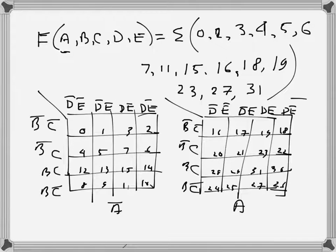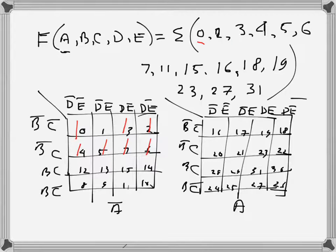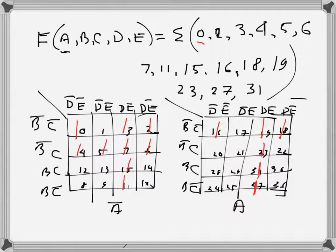Now I will fill in the ones. The minterms are: 0, 2, 3, 4, 5, 6, 7, 11, 15 in the first K-map, and 16, 18, 19, 23, 27, and 31 in the second K-map. These are the cells I need to group.